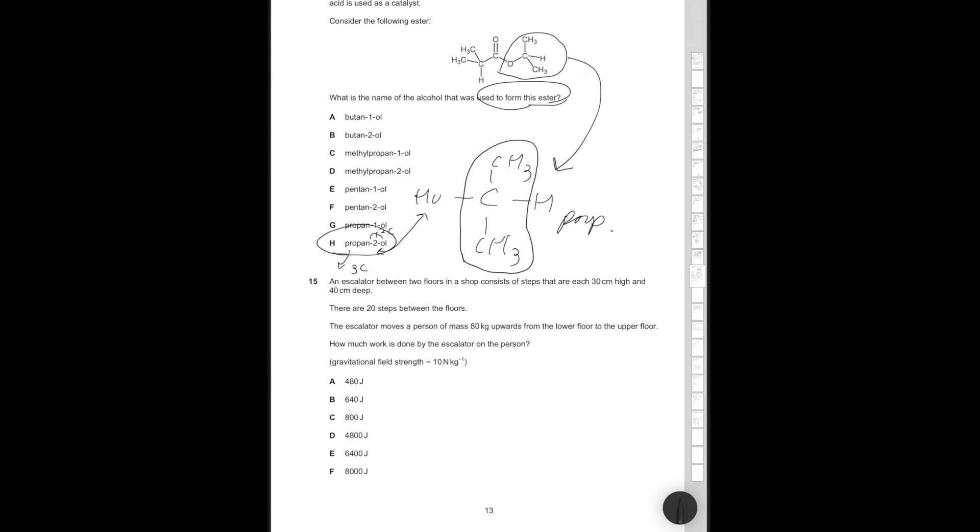Question 15. An escalator between two floors in a shop consists of steps that are 30 centimeters high and 40 centimeters deep. If we draw it out, 30 cm, 40 cm. There are 20 steps between the floors. The escalator moves a person of mass 80 kilograms upwards from the lower floor to the upper floor. How much work is done by the escalator on the person? Work done is equal to force times distance moved. In this case, force is going to be mg, which is going to be equal to weight, which is going to be equal to 80 times 10, which is 800 newtons. Distance is going to be 30 centimeters times by 20, which is going to be 600 cm, which is equal to 6 meters.